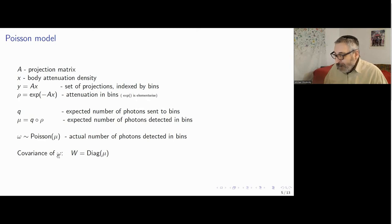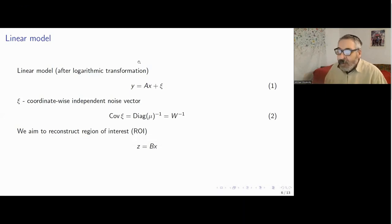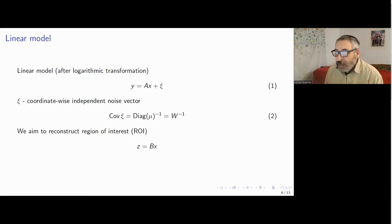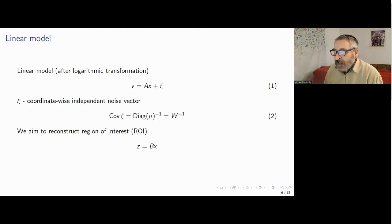Observed photons in our simplistic model form a Poisson random vector with independent components of expectation mu. Since in a Poisson random variable variance equals expectation, the covariance matrix of W is a diagonal matrix with entries mu. There are different statistical ways to treat this model. A more accurate way would be to use Poissonian maximum likelihood, which we address in the second part of the talk. But quite often in tomography, people apply a linear logarithmic transformation to the observed data, arriving at a linear model that is reasonably accurate when the number of photons is large.